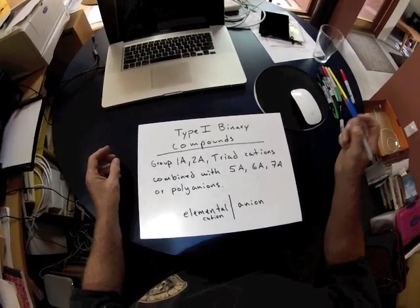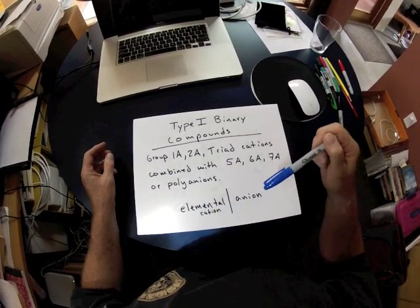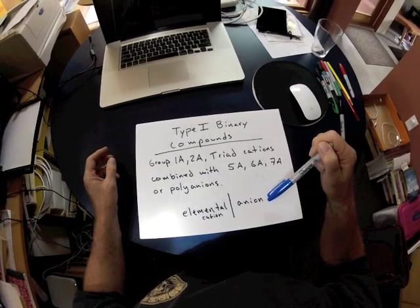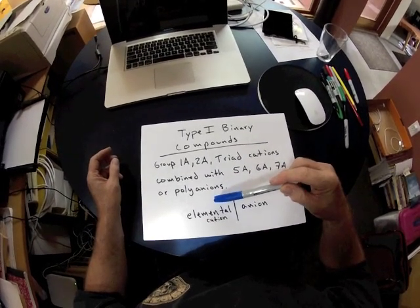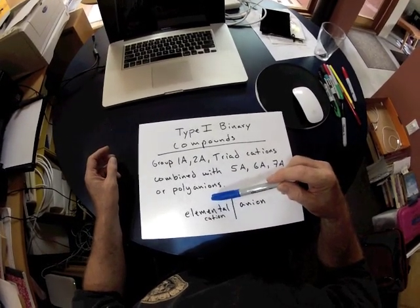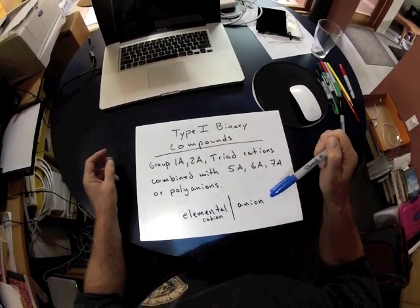The way the naming works is that we always name the metal cation first, followed by the name of the anion. In the case of the cations, we use the elemental name of the metal, and that will then be followed specifically by the name of the anion.